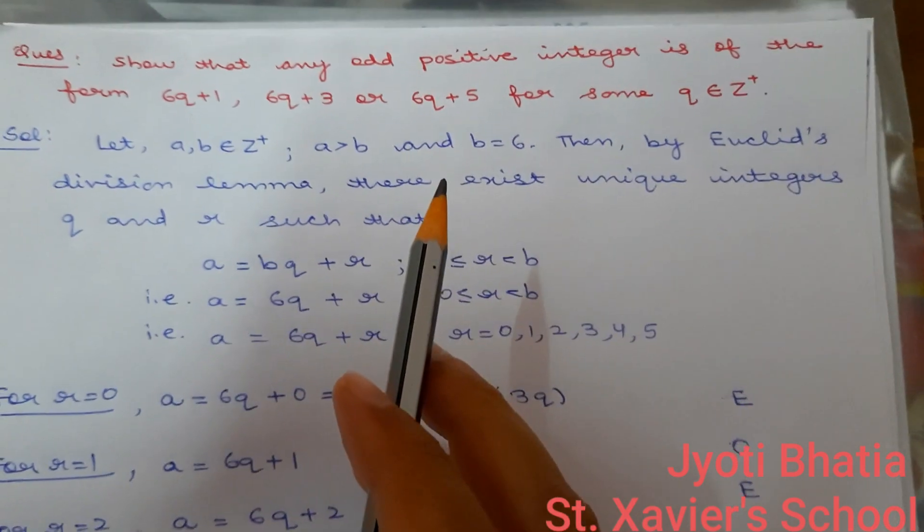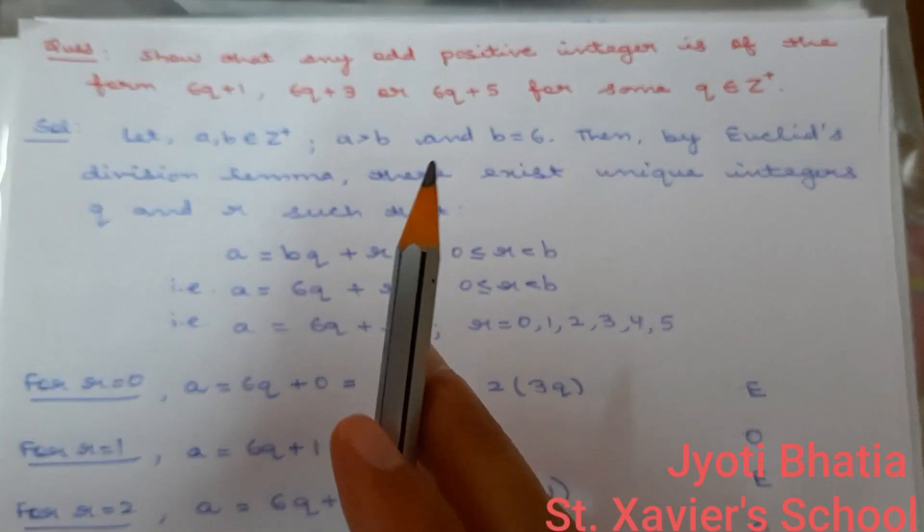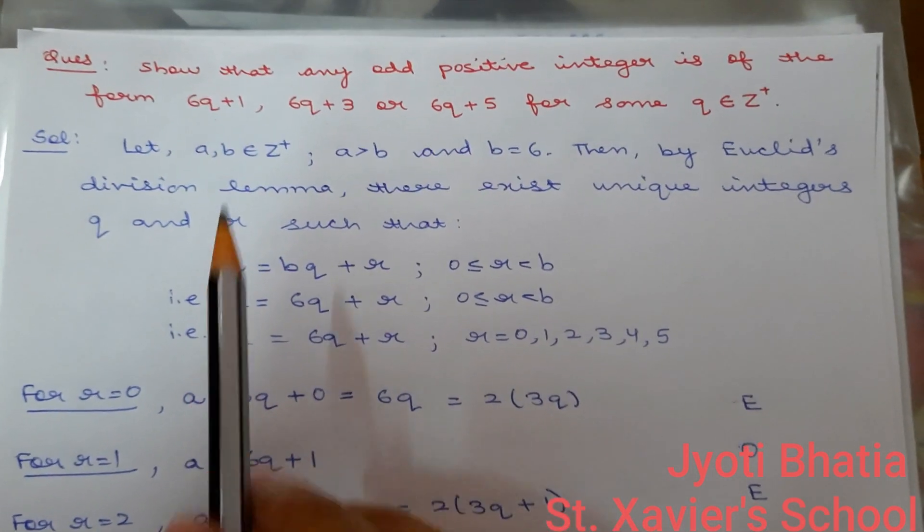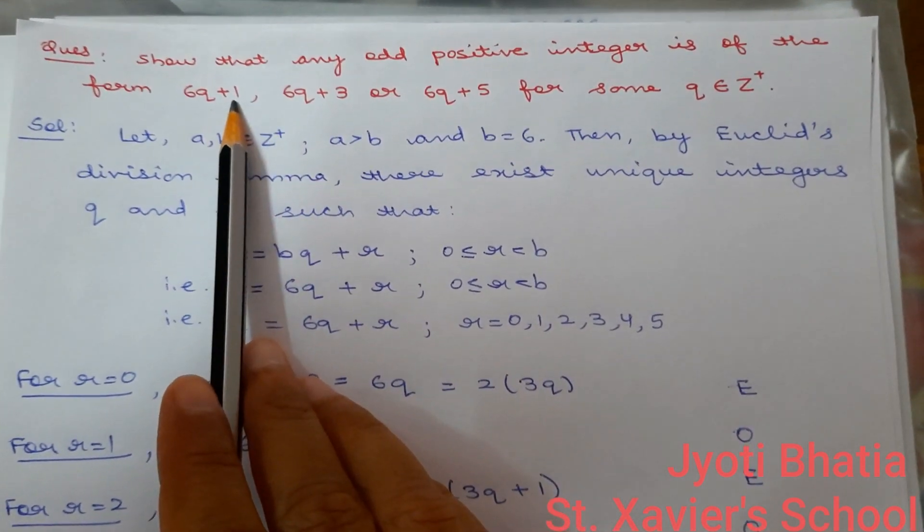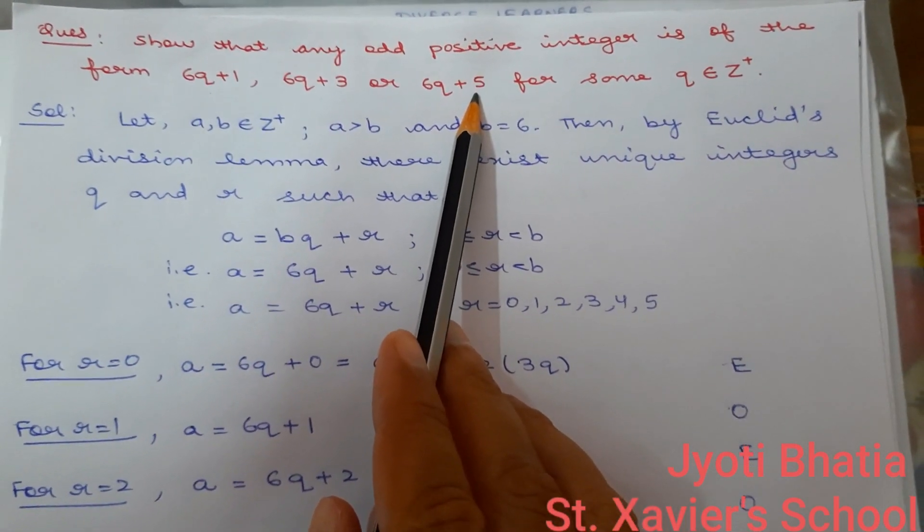It means if you take any odd integer in your mind and divide it by 6, you will get either 1, 3 or 5 as a remainder.